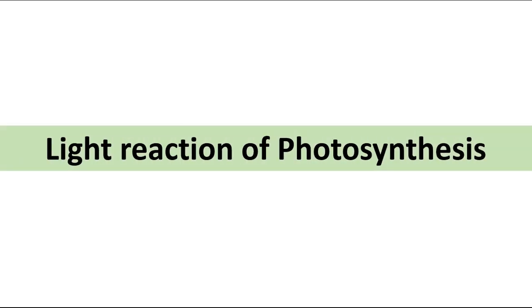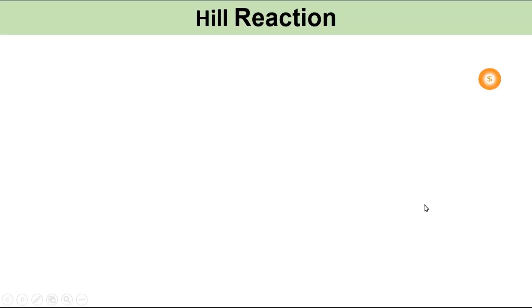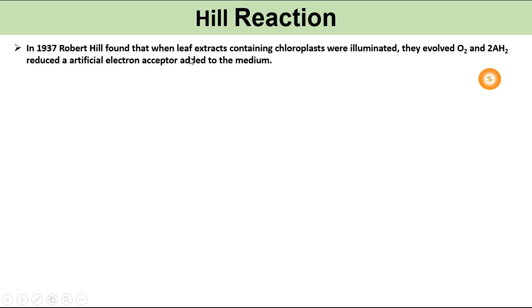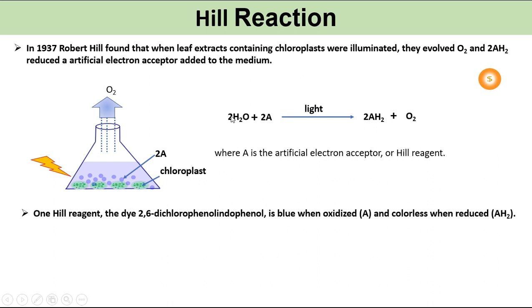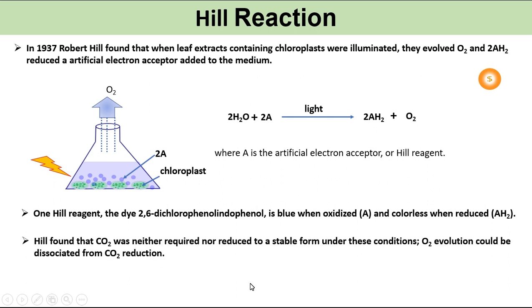In this video we will discuss the light reaction of photosynthesis, also known as the Hill reaction. In 1937, Robert Hill found that when leaf extracts containing chloroplasts were illuminated, they evolved oxygen and reduced artificial electron acceptors added to the medium. The Hill reagent, dichlorophenol indophenol (DCIP), is blue when oxidized and colorless when reduced. Hill found that CO2 was neither required nor reduced to a stable form under these conditions.